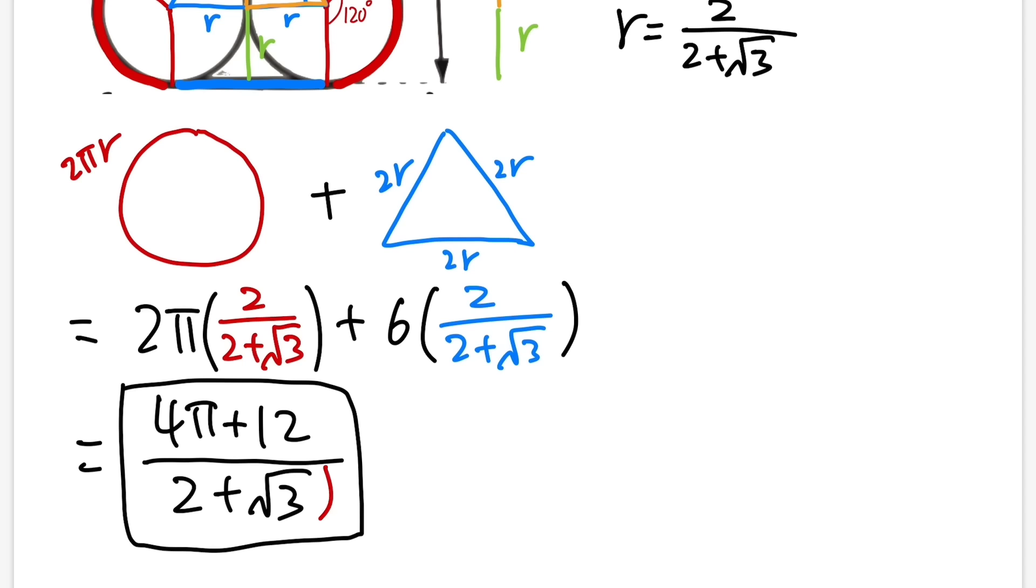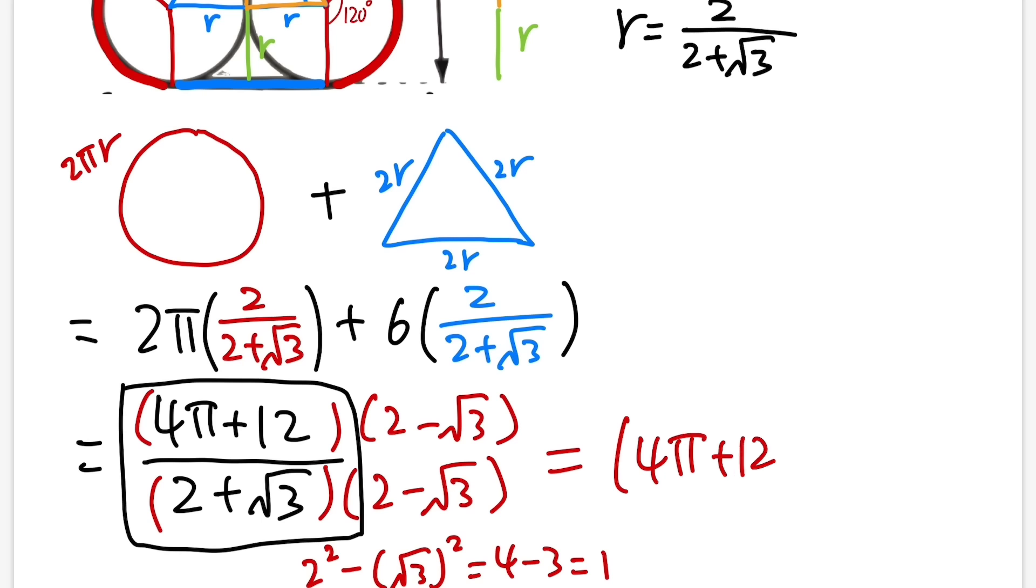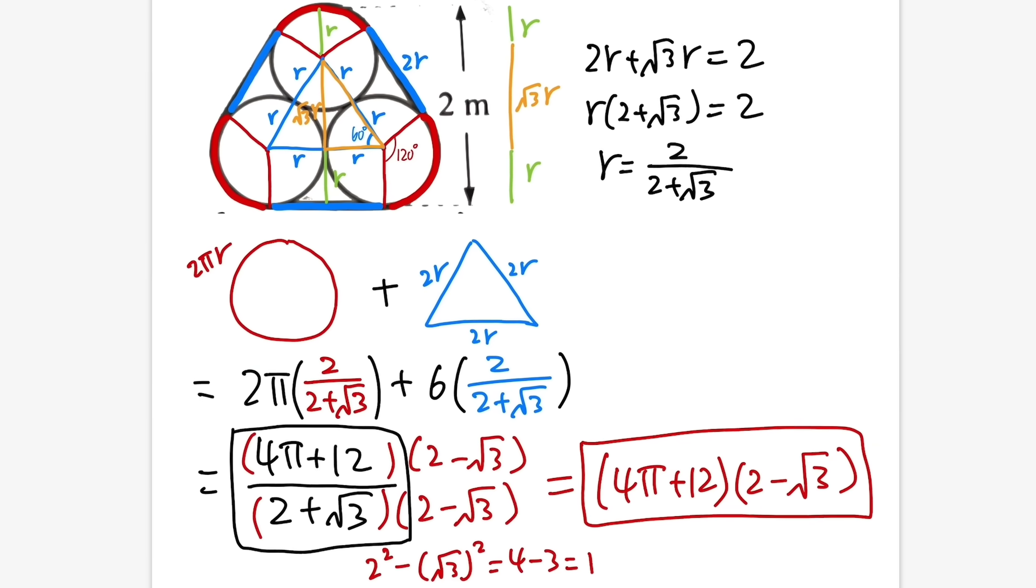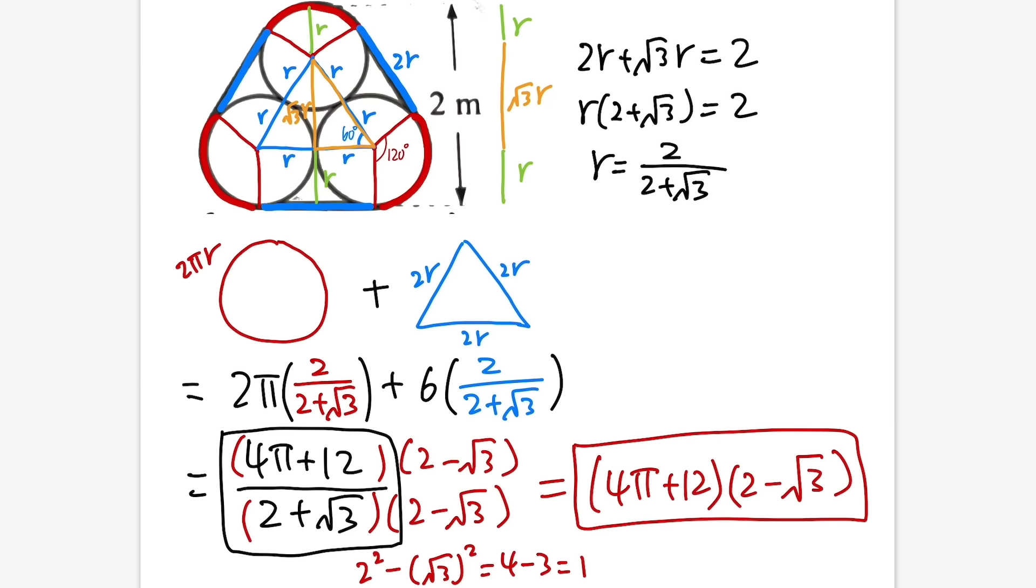And if you really want to, of course you can multiply the top and bottom by its conjugate, namely (2 minus √3). And if you do this, it's actually pretty nice because the bottom is just 2 squared minus √3 squared, which is just 4 minus 3, which is just 1. So you will just end up with (4π plus 12) times (2 minus √3) like that. And of course you can also multiply this out, but I think we have done enough. So this will be it.